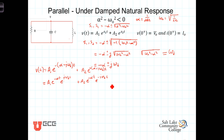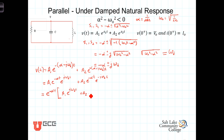Notice that each of these terms has an e to the minus alpha T, which we factor out, giving e to the minus alpha T times the quantity A1 times e to the positive j omega sub D T, plus A2 times e to the negative j omega sub D T.